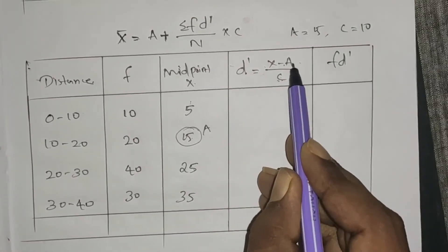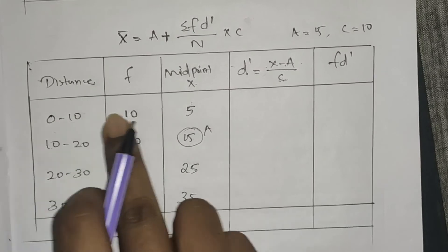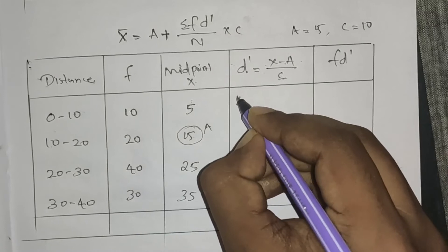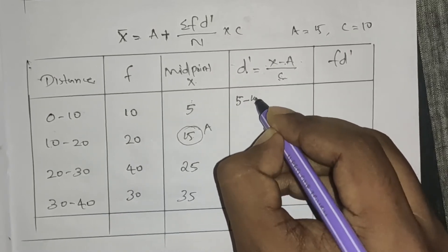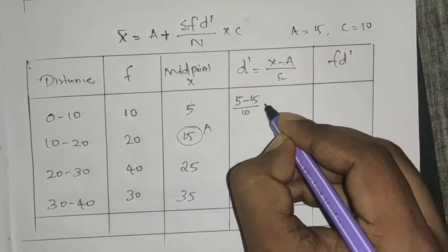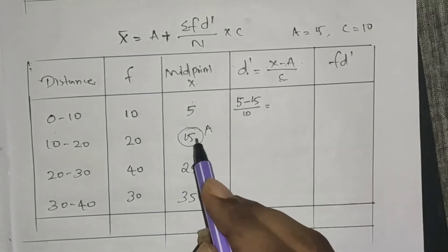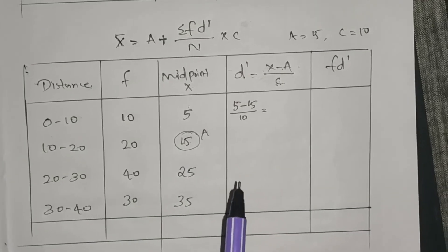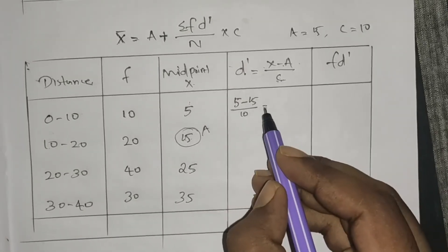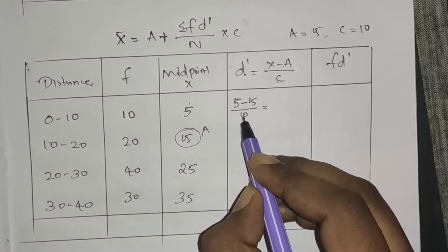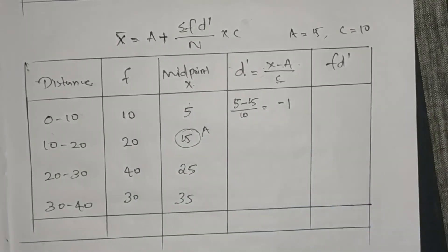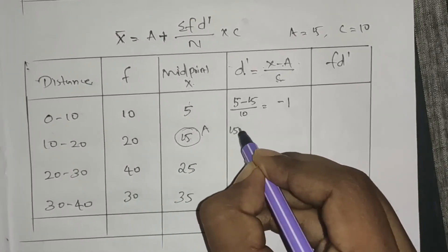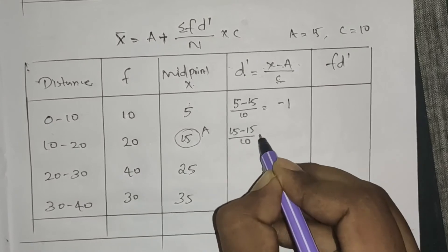Computing d dash: for x equals 5, d dash equals (5 minus 15) divided by 10 equals minus 1. For x equals 15, d dash equals (15 minus 15) divided by 10 equals 0. Then d dash values are minus 1, 0, 1, 2.